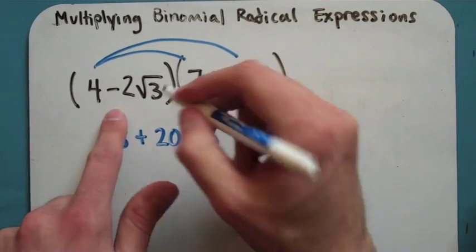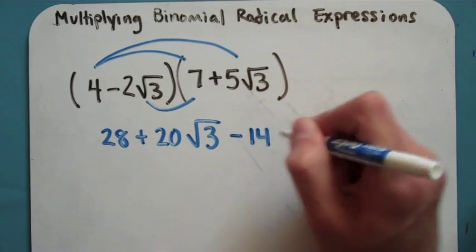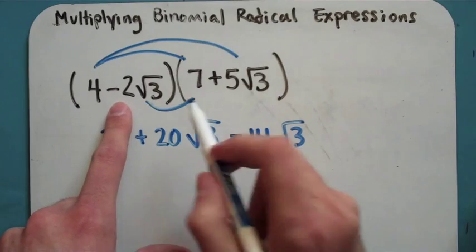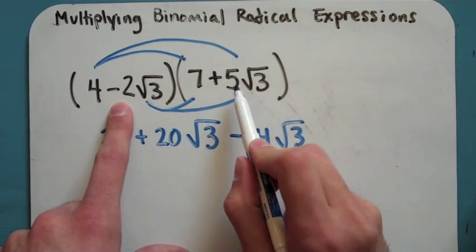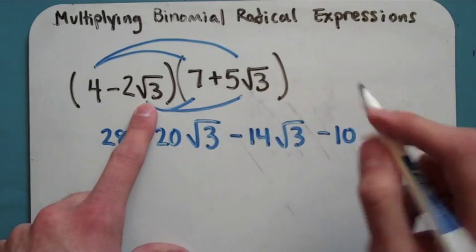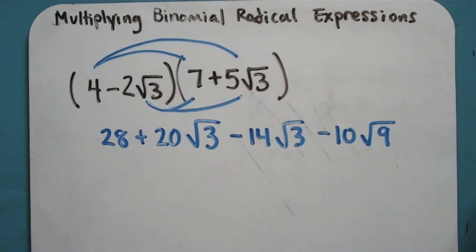We do our next one right here. Negative 2 root 3 times 7 is going to be negative 14 root 3. And finally, negative 2 root 3 times positive 5 root 3, negative 2 times positive 5 is negative 10. Root 3 times root 3 is going to be root 9, because on that one you multiply the insides right there.